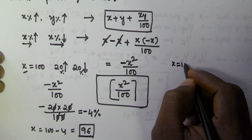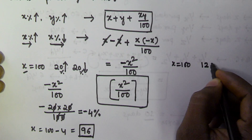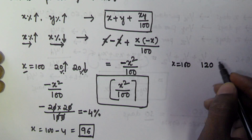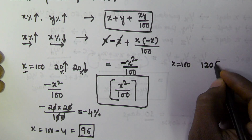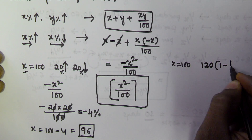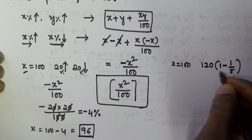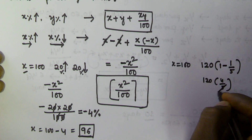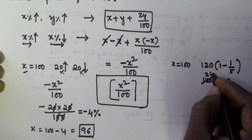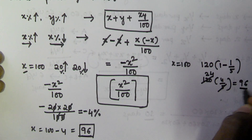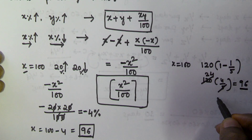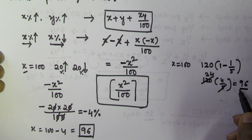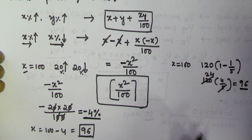We can verify this directly: starting with x equal to 100, incrementing by 20% gives 120. Then decrementing by 20% means multiplying by 1 minus 1/5, which is 4/5. So 120 multiplied by 4 by 5 gives 96. By incrementing 20% and then decrementing 20%, the value is 96, confirming a percentage change of minus 4%. I hope you got this — thank you very much for watching, please subscribe to my channel.